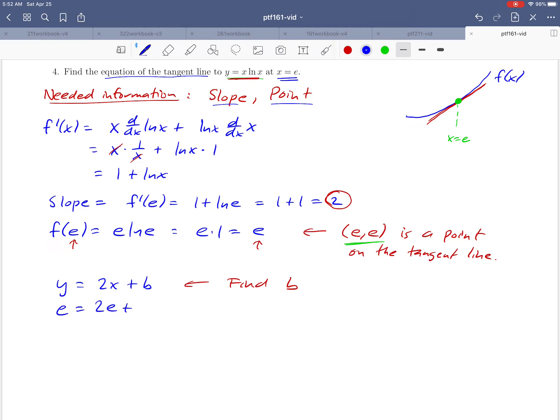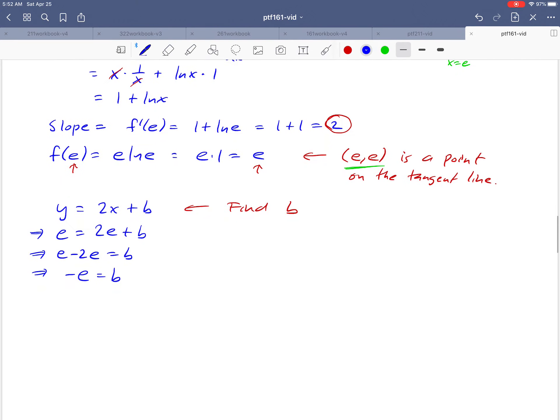And notice that that gives us a way to solve for b. We can just subtract 2e from both sides. So e minus 2e is negative e. Remember that e is just a number. So there's our y-intercept.